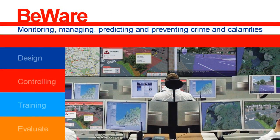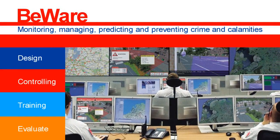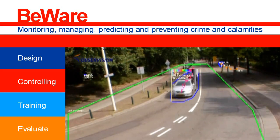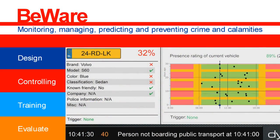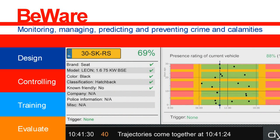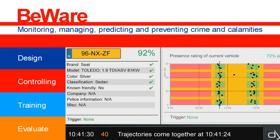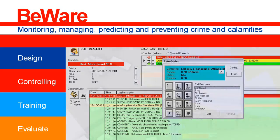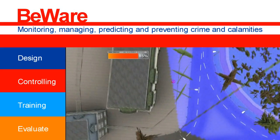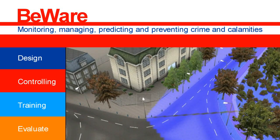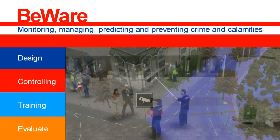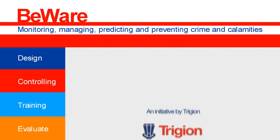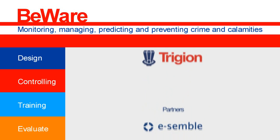Beware combines broad experience in security management with innovations in different technologies. Beware's intelligent sensors enable fast object recognition and classification. Beware's powerful environment for analysis and correlations enables real-time dynamic threat analysis. Beware's innovative control room setting provides the operator with an optimal workbench. Beware's 3D virtual reality environment provides a very attractive user interface, including full situational awareness, as well as a virtual reality training and designing tool. Beware is an initiative of Trigion, the Netherlands' largest security management organization.